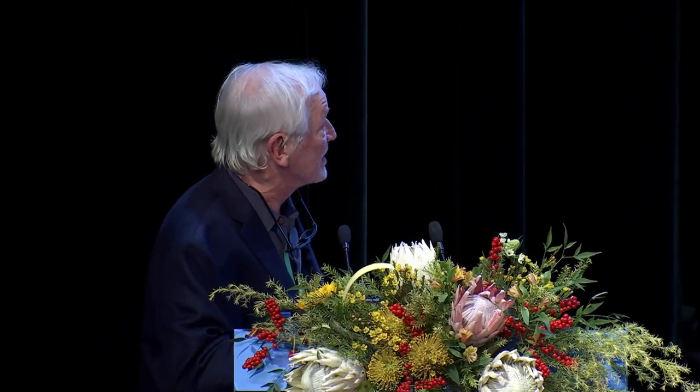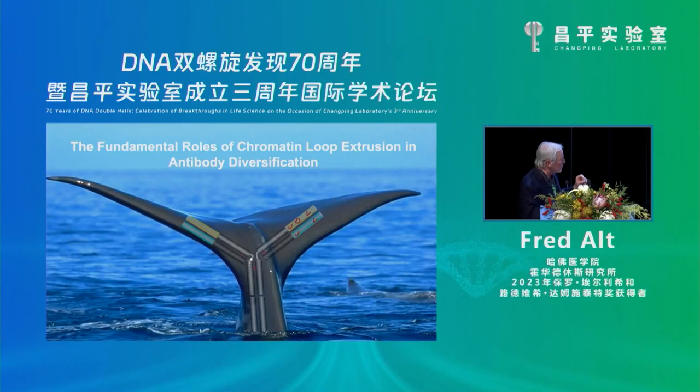What I want to talk about today is the role of chromatin loop extrusion in antibody diversification. To set that up, this first photo was taken by a postdoc of mine, Chung Wang Gu, when a whale was going under the boat, and it gave him the impression of an antibody molecule. As you probably know, antibody subunits are composed of two identical heavy and light polypeptide chains.